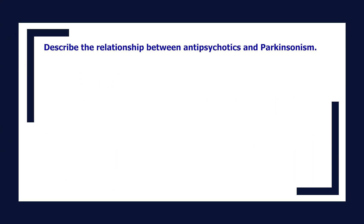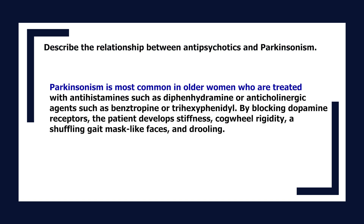Describe the relationship between antipsychotics and Parkinsonism. Parkinsonism is most common in older women and is treated with antihistamines such as diphenhydramine or anticholinergic agents such as benztropine or trihexyphenidyl. By blocking dopamine receptors, the patient develops stiffness, cogwheel rigidity, a shuffling gait, mask-like facies, and drooling.